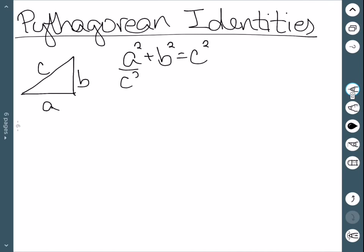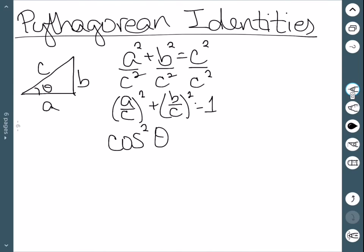Dividing through by c squared everywhere then gives us a over c squared plus b over c squared is equal to 1. And if I pick an angle in my triangle, we can see that a over c is cosine. And b over c is sine. So this gives us our first of three Pythagorean identities.